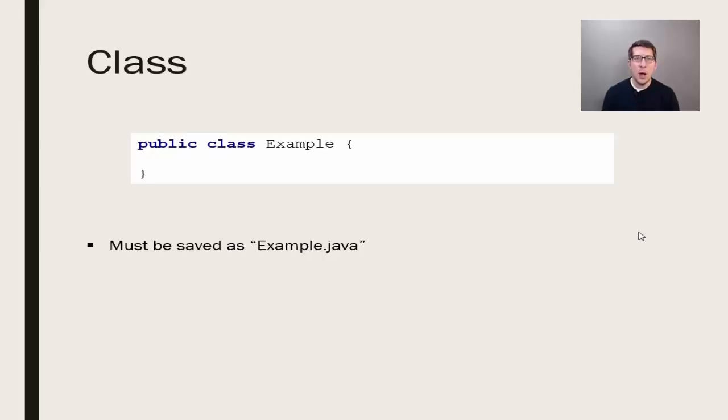First is the idea of the class. A class is a way to define your own data type, which you will do later on in the course. Even if you are not creating your own type, however, your code must be run from inside of a class.